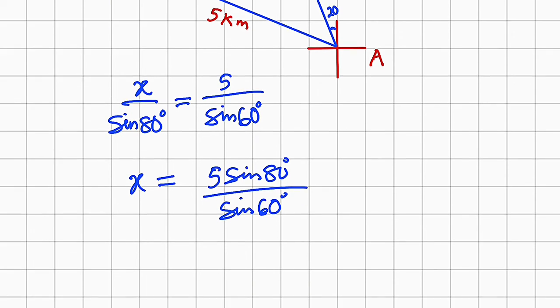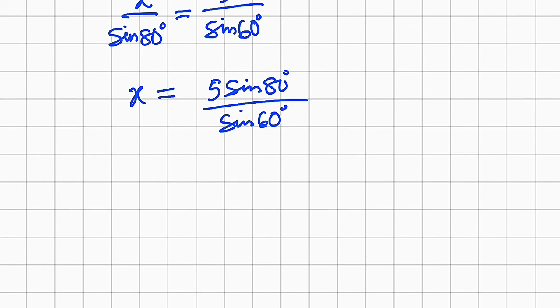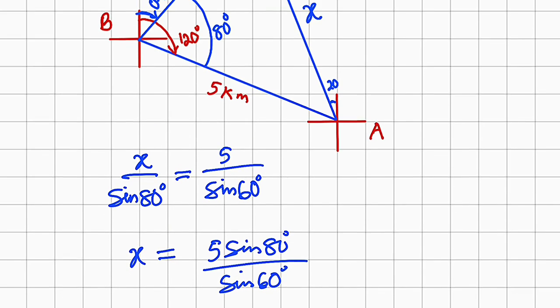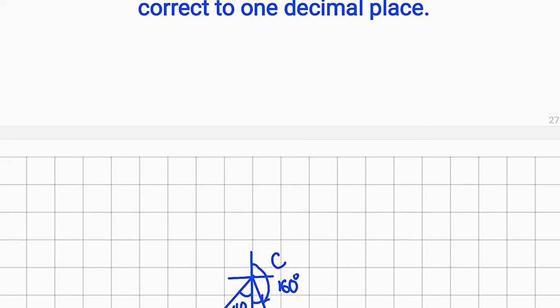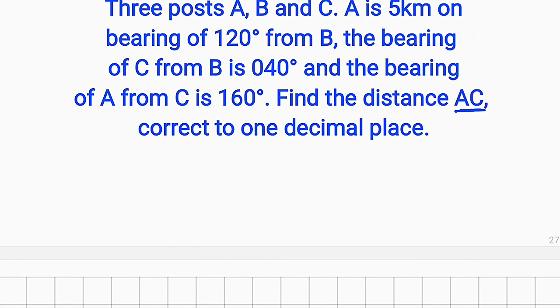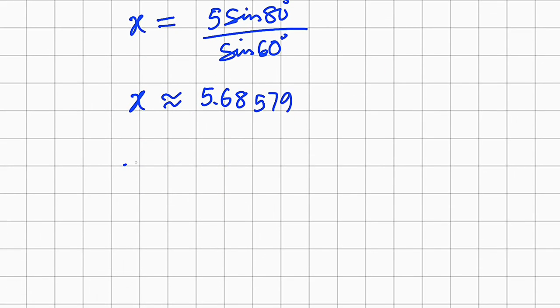I'm going to use my calculator to press everything directly: 5 multiplied by sine of 80 degrees divided by sine of 60 degrees. This is approximately equal to 5.68579 and so on. But remember, the question stated that we should write the answer correct to one decimal place. So correct to one decimal place, therefore X equals 5.7.